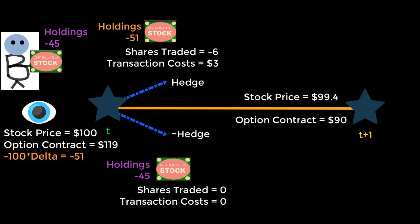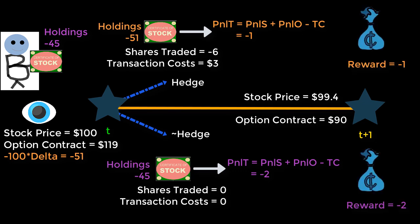The agent observes a total profit and loss resulting from the change in stock price, the change in option price, and transaction costs paid, along with the reward related to the total profit and loss.